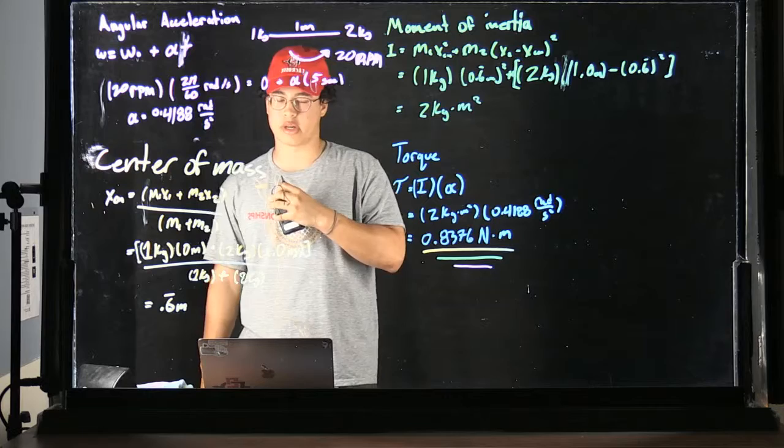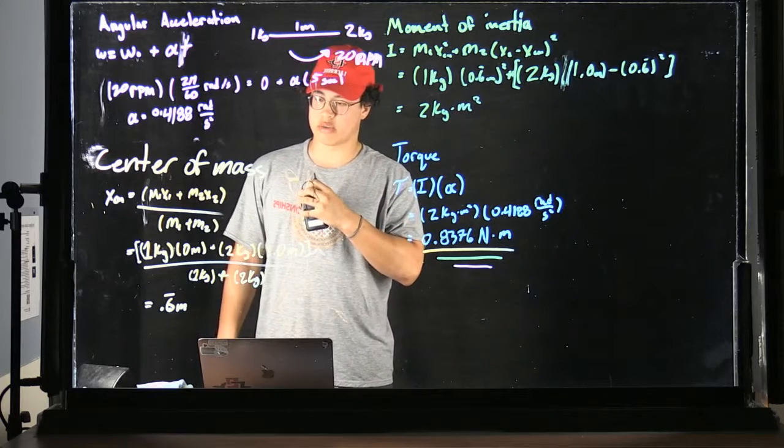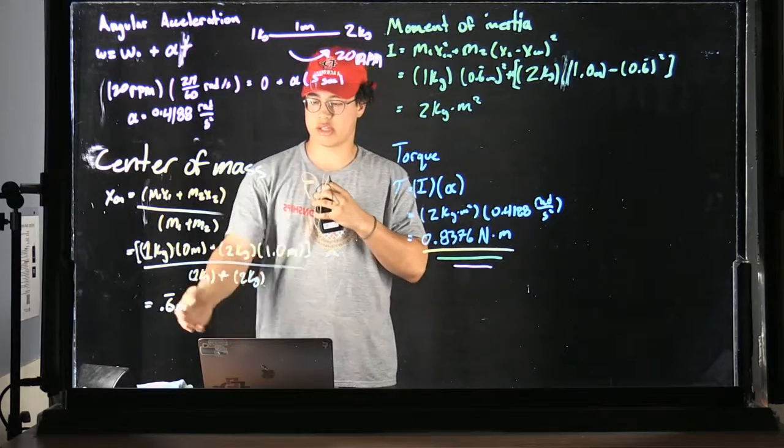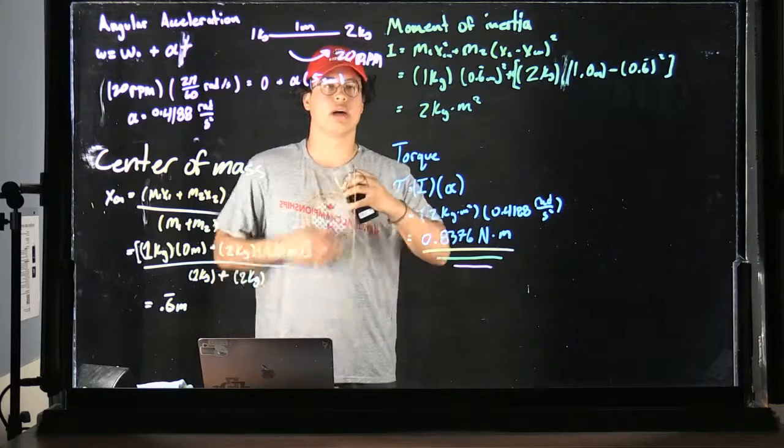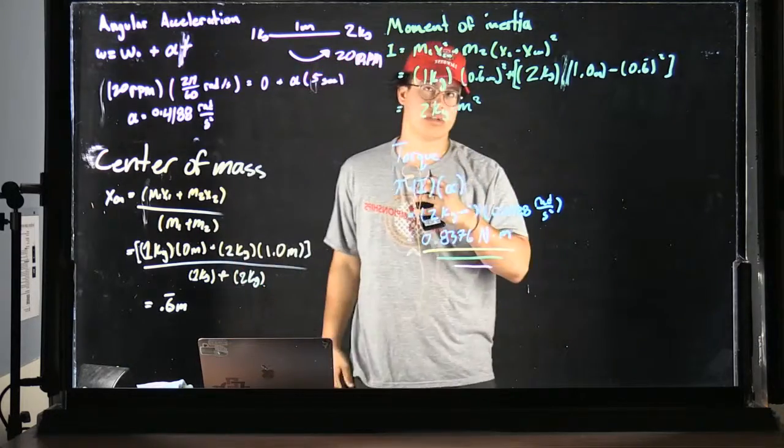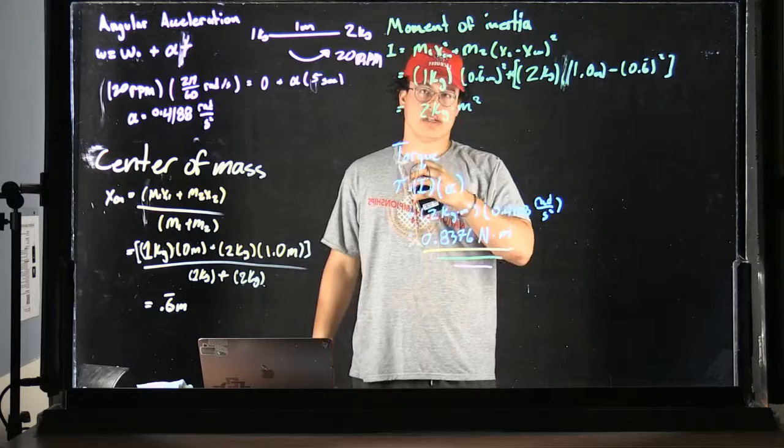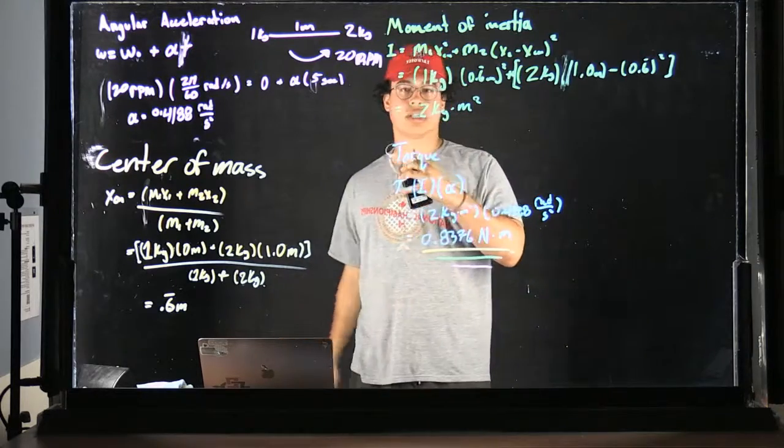Plus the mass of the second sphere times the length of the rod, which is just 1, and all of that divided by 3. And the resulting equation equals 0.6 repeating meters.